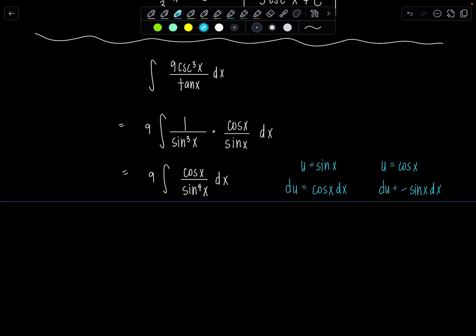Which one do I have? I have cosine x dx. So u needs to be sine x. Very good. The other one wouldn't work. You can't have negative sine x dx. And then all the sines be in the bottom that won't work.